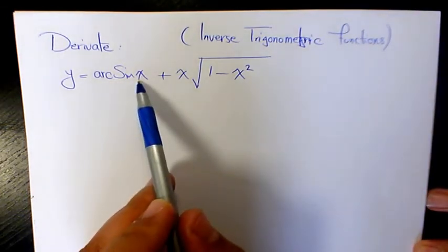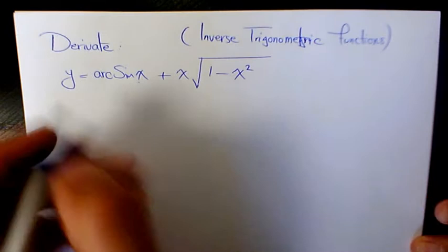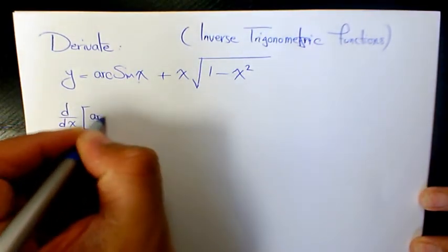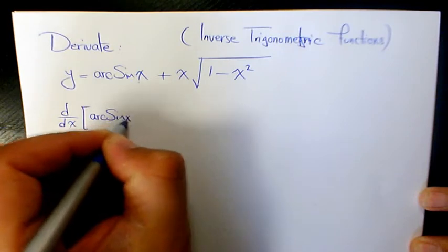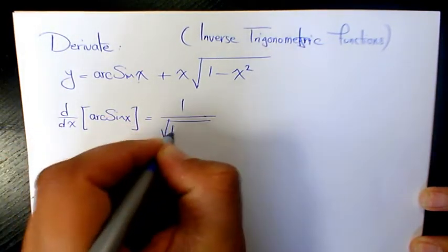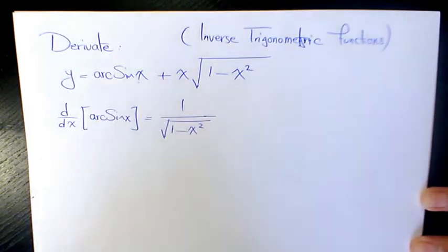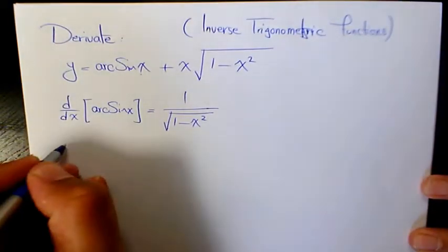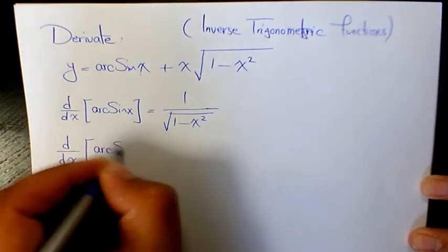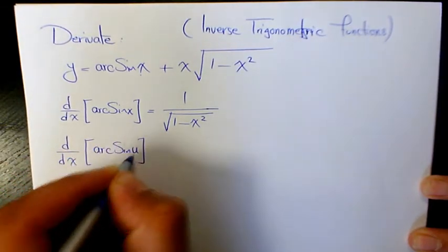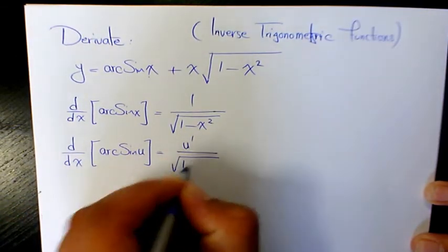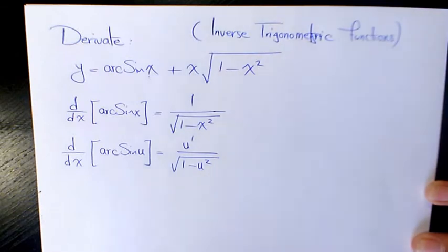Arc sine x is the inverse of sine x, and the derivative of arc sine x with respect to x is going to be 1 over square root of 1 minus x squared. Or we can say the derivative of arc sine u, when u is a function of x with respect to x, is going to be u prime over square root of 1 minus u squared.